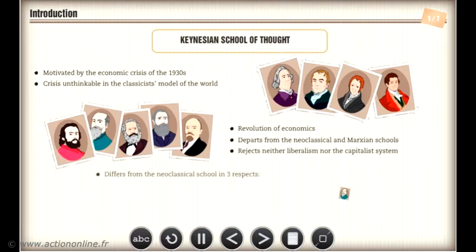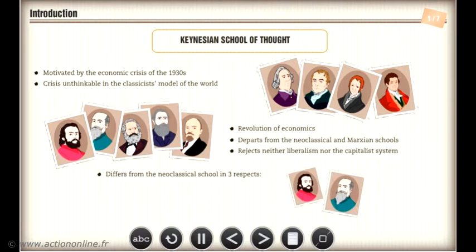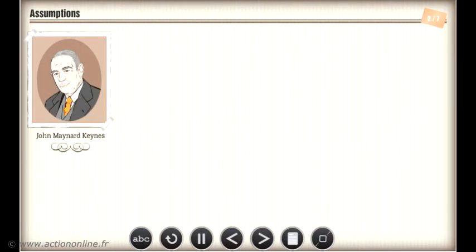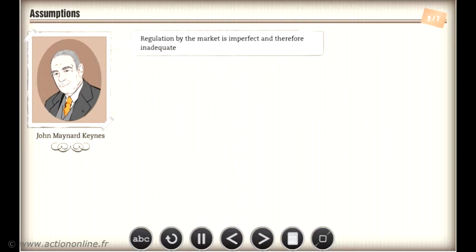Keynesianism differs from the neoclassical school in three respects: the method, the problem, and the solutions. Although John Maynard Keynes, the founder of the Keynesian school, was a supporter of democracy and capitalism, he considered regulation by the market to be imperfect and therefore inadequate.